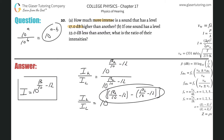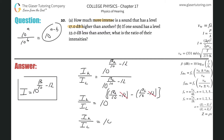Now remember another rule for exponents with similar bases: if you have 10 raised to A divided by 10 raised to B, you can simply rewrite that as 10 raised to A minus B. Keeping that in mind, this is like A and this is like B. So basically now I can rewrite this: the higher intensity relative to the lower intensity will be equal to 10 raised to the higher decibel value over 10 minus 12, minus the lower beta all over 10 minus 12.